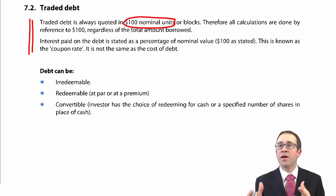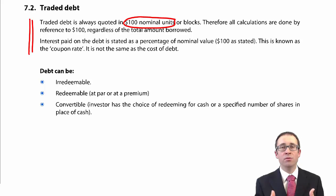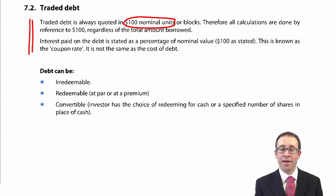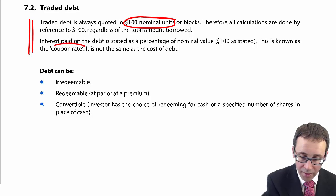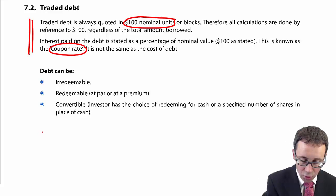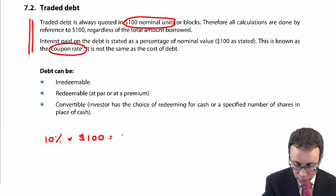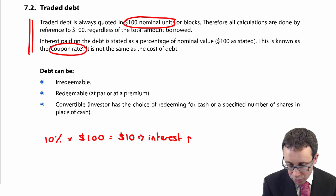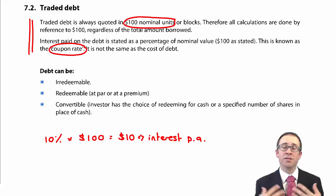That block of 100 has a $100 nominal value. So all of the calculations are based upon a $100 nominal value amount of debt. It then goes on to say that the interest on the debt is stated as a percentage of the nominal value — so looking at the coupon rates. If you have a coupon rate of 10%, then 10% of $100 is $10, and that $10 is your interest that you pay per annum — what you have promised to the debt holder to pay them.